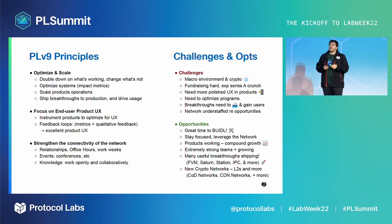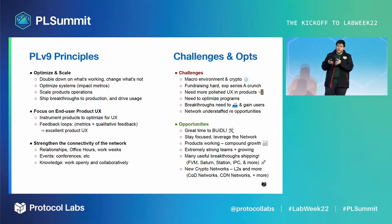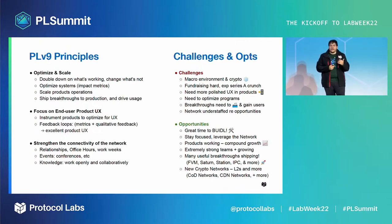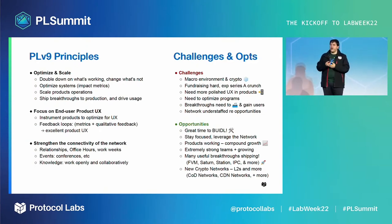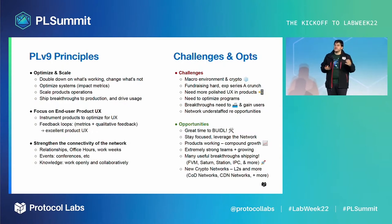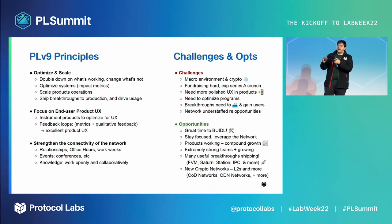Don't let decentralization or security get in the way of optimizing a good product — find a way to have both. That also applies to all of the programs supporting the network; we need to instrument and get feedback across all of them to make sure those programs are good products that everyone can benefit from. The third major principle is to strengthen the connectivity of the network — deepen the relationships, invest deeply in office hours, gather in team summits, double down with events. And I want to encourage all teams to work openly. We've had major successes with many groups publishing all of their roadmaps, notes, and maps. That's extremely useful to help many teams across many parts of the network work together.